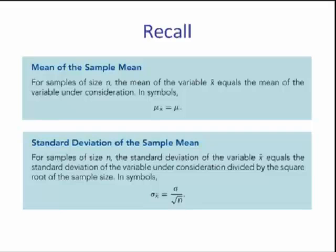If you recall from the last video, we learned that the mean of the sample means is equal to the population mean. We also learned that the standard deviation of the sample means is actually smaller than the population — by this formula: the population standard deviation divided by the square root of n. So as n increases, the standard deviation of the sample means decreases.